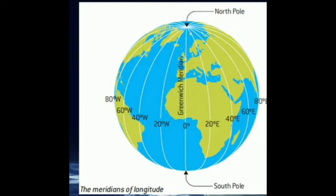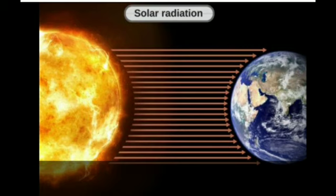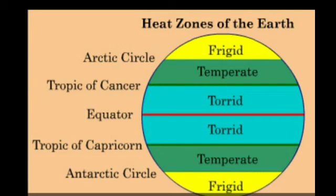Next, we saw about solar radiation — the sun releases heat energy from the sun in the form of radiation, which is called solar radiation. The next topic was about the various heat zones: the zero-degree equator, torrid zone, temperate zone, and frigid zone. The frigid zone lies around the poles, along with the temperate zone and the torrid zone.